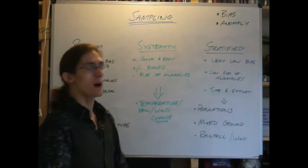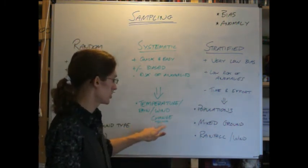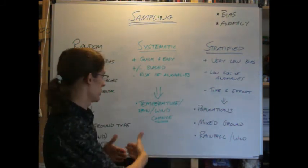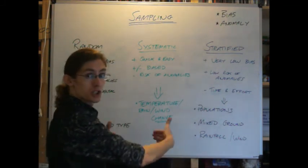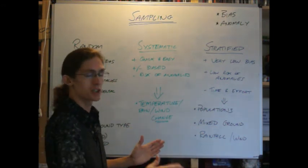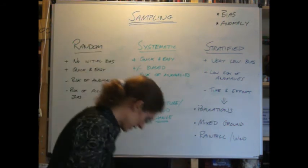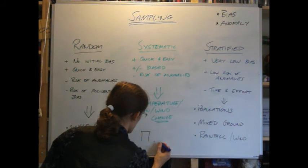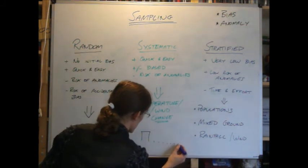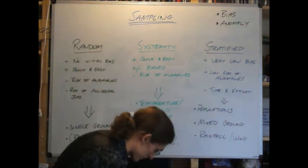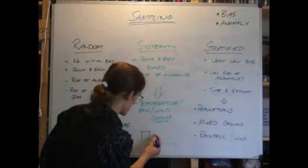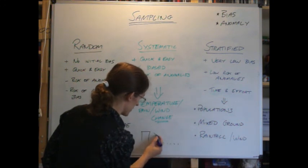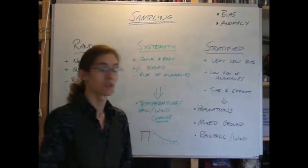But systematic is useful as well. Systematic is good for measuring change. So if you want to measure temperature change, rainfall change, wind speed or direction change from a certain area, systematic is great, because you can plot a really nice, easy graph. If you're doing distance from a building, and you're taking your samples at every point, it means that you can figure out your graph of temperature change. Because you can go, here are the temperatures from the building. So it's got its own uses.